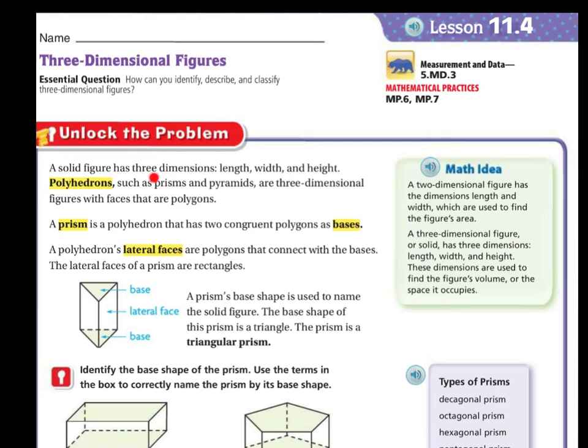A solid figure has three dimensions: length, width, and height. Polyhedrons, such as prisms and pyramids, are three-dimensional figures with faces that are polygons.